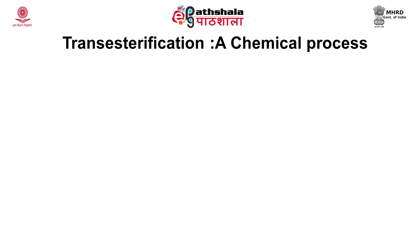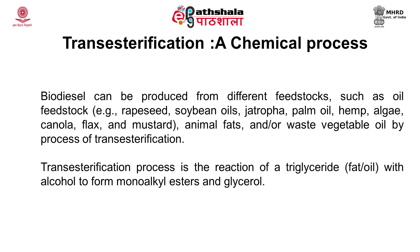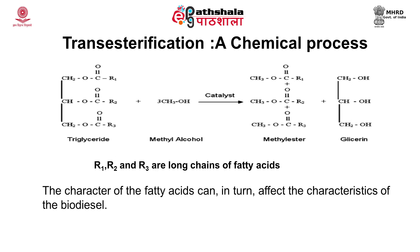The transesterification process is a chemical process for biodiesel production from feedstocks such as vegetable oil or animal fat. In this process, triglycerides present in the fat or oil react with alcohol to form monoalkyl esters and glycerol. In the schematic diagram, R1, R2, and R3 in the triglycerides represent long chains of fatty acids, which vary with the oil used as substrate. If methanol is used, you get methyl esters; if ethanol is used, you get ethyl esters — this product is technically biodiesel. The character of the fatty acids affects the characteristics of the biodiesel.